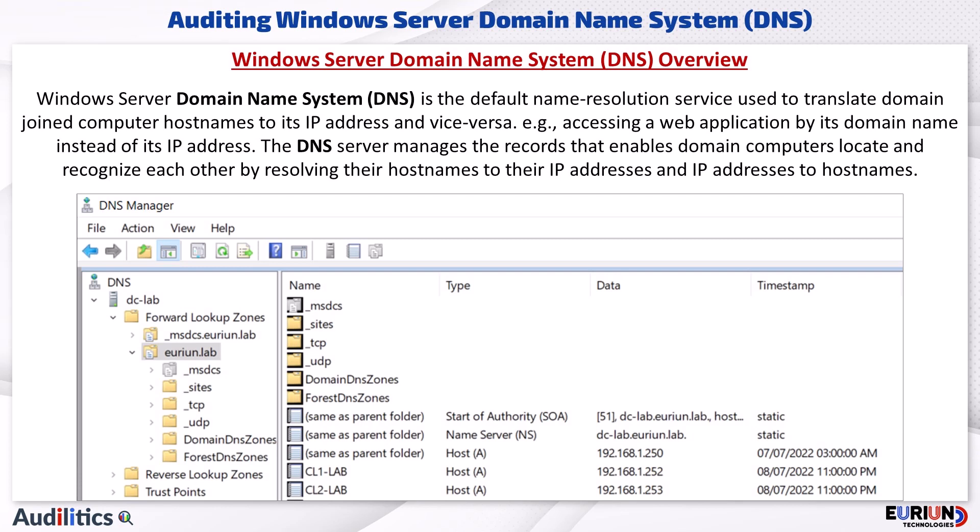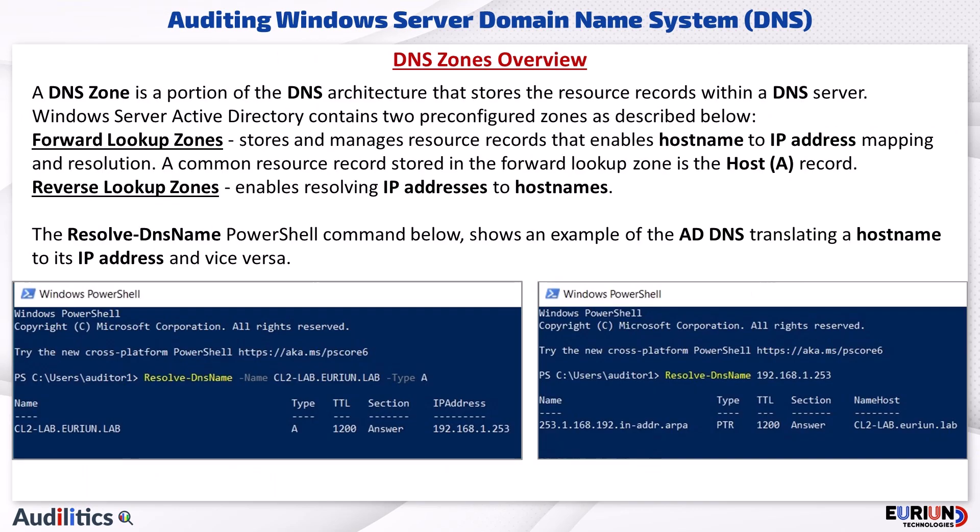The Windows DNS server manages the records that enable domain computers to locate and recognize each other by resolving their hostnames to IP addresses and IP addresses to hostnames. A DNS zone is a portion of the DNS architecture that stores resource records within a DNS server. Windows Server Active Directory contains two pre-configured zones: the forward lookup and reverse lookup zones.